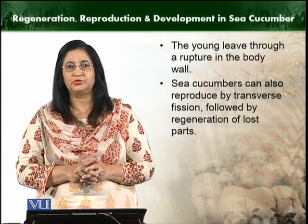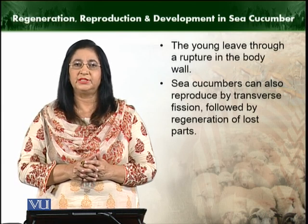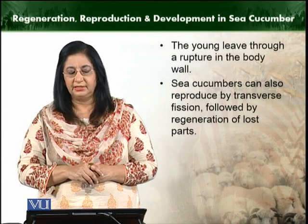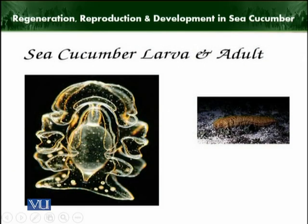The young larva that develops will leave the body by rupturing the body wall. Sea cucumbers can also reproduce by transverse fission, which is a mode of asexual reproduction. So sea cucumbers have both modes of reproduction — sexual as well as asexual — followed by regeneration of lost parts. The planktonic larva is free-swimming and free-floating, bearing cilia or ciliary bands, and ultimately attaches itself to a substratum to develop into the adult sea cucumber.